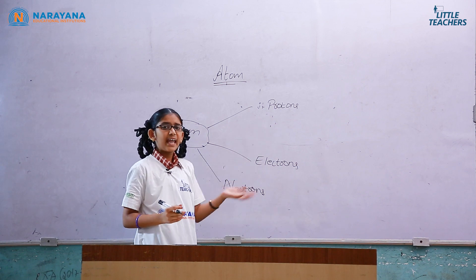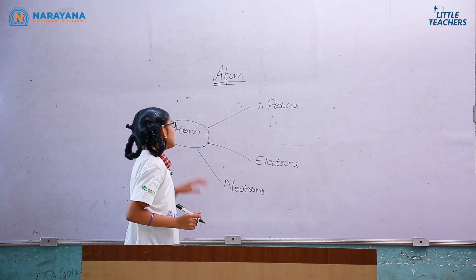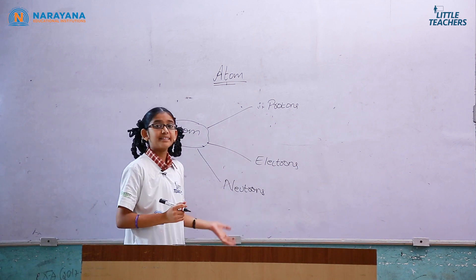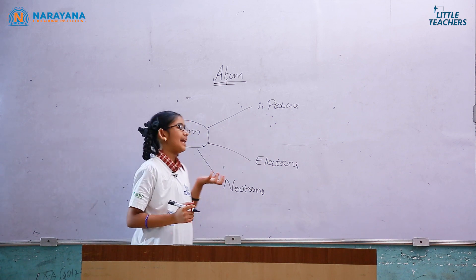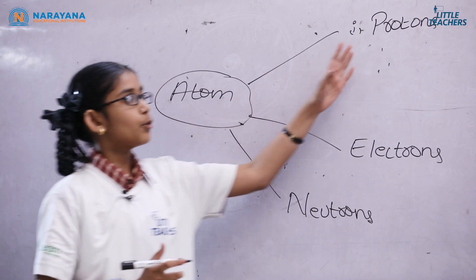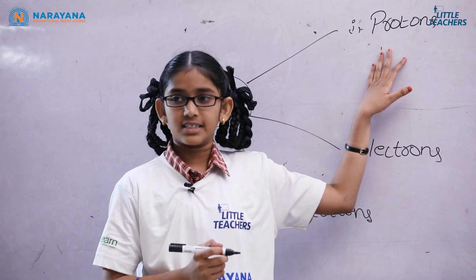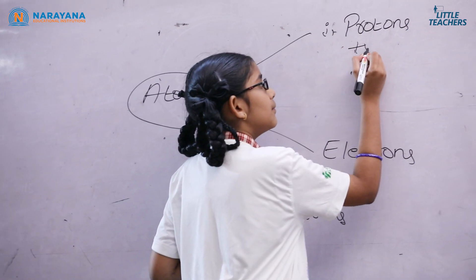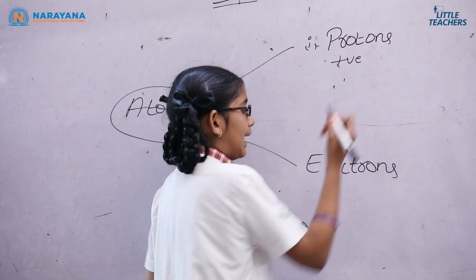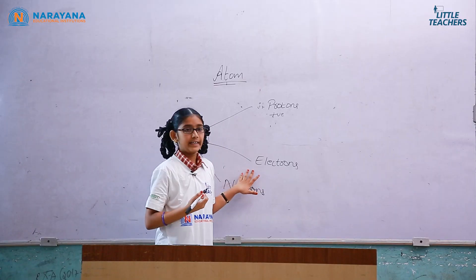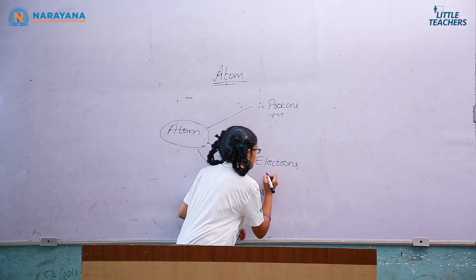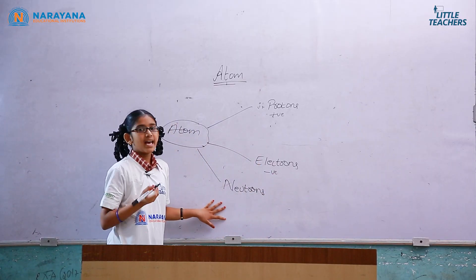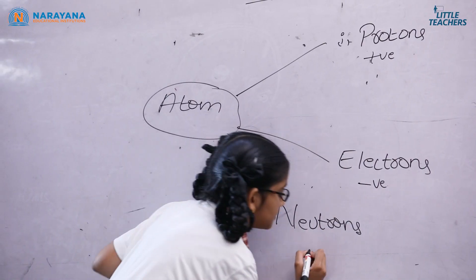Protons are the lightest particles in an atom. Neutrons are the heaviest particles in an atom. Protons are positively charged, electrons are negatively charged, and neutrons have no charge.